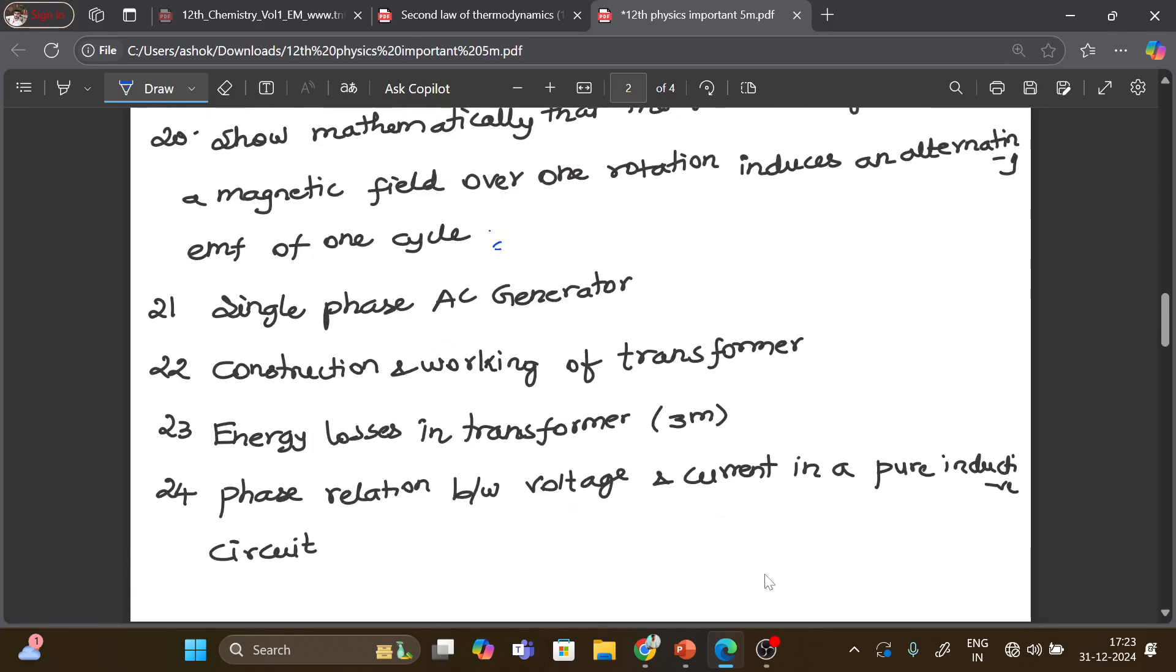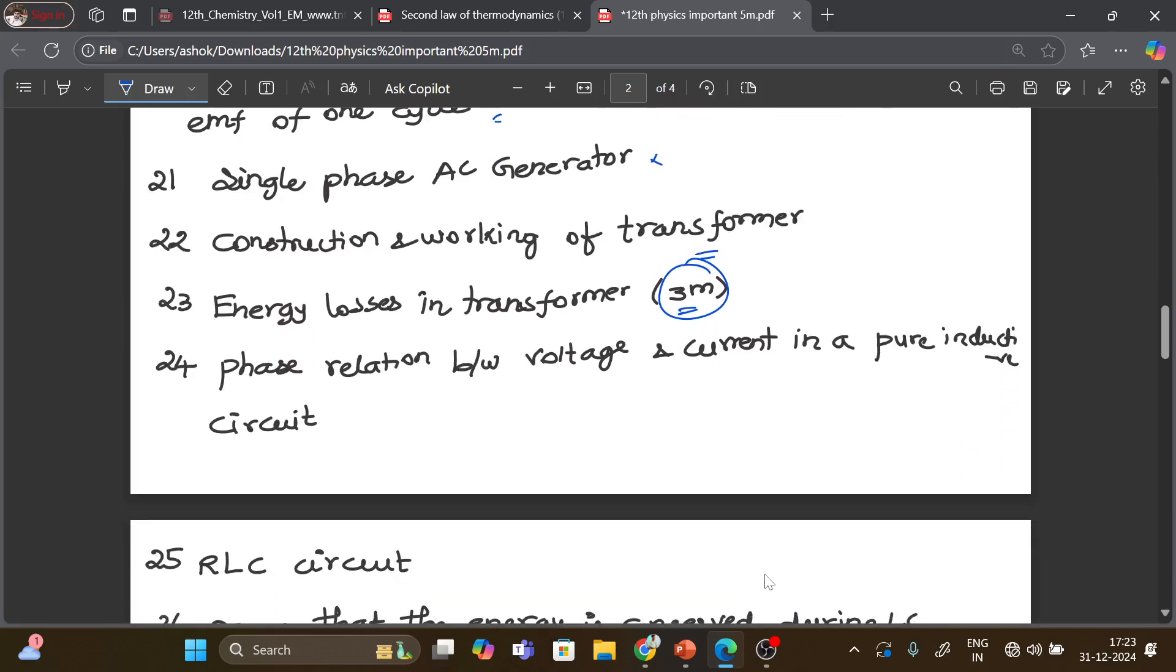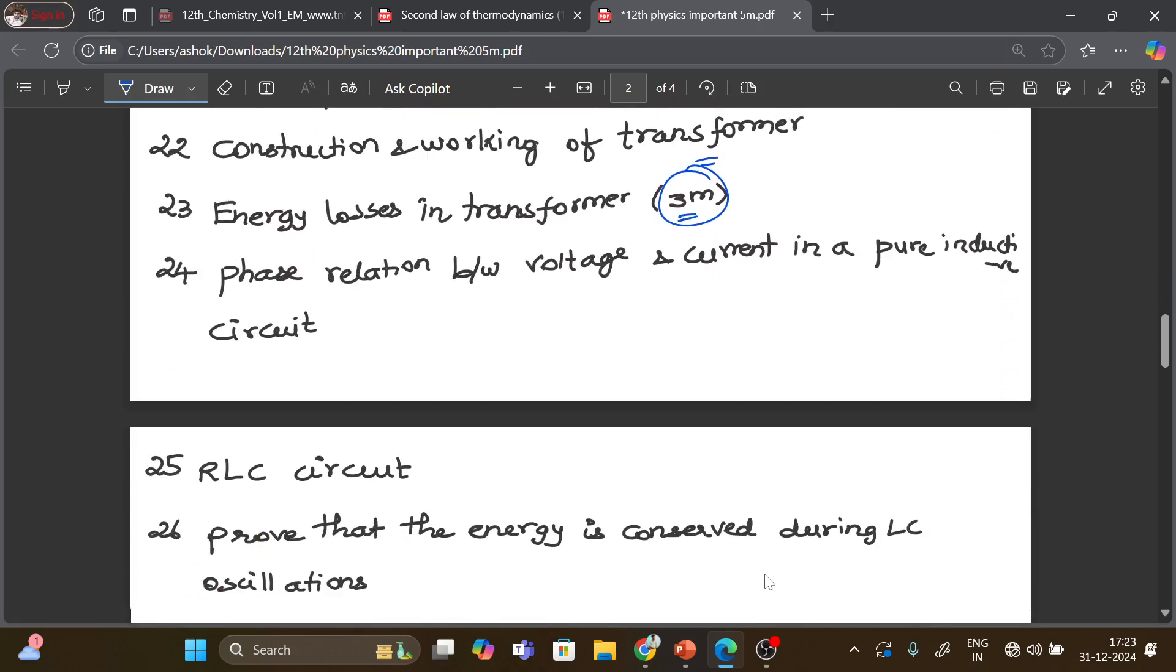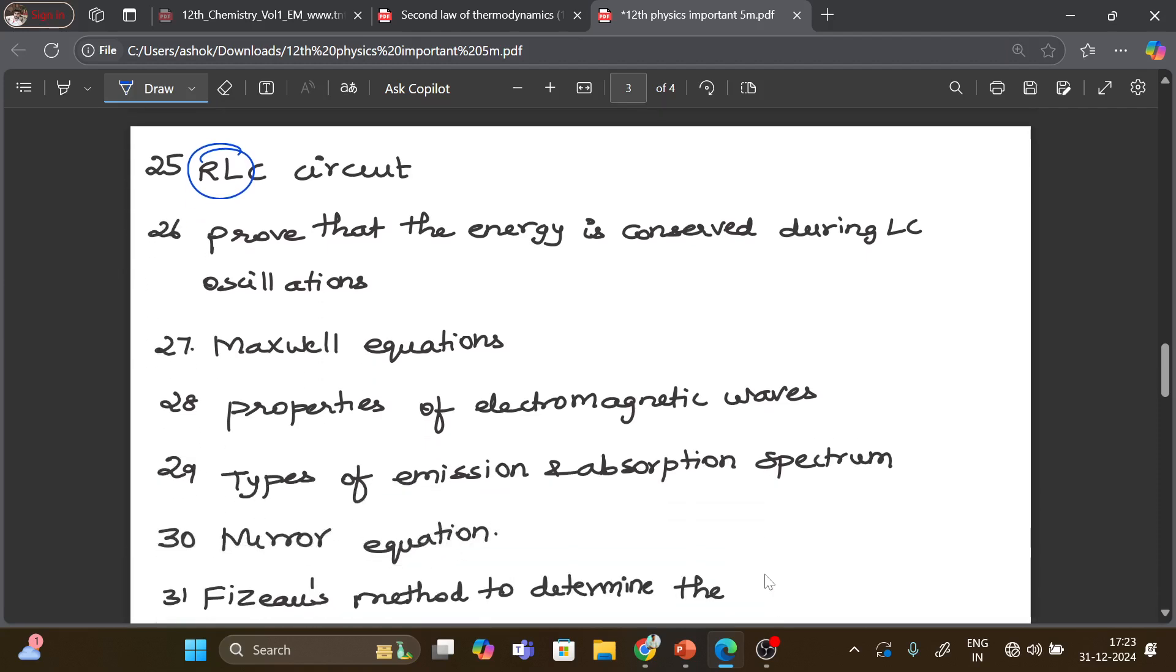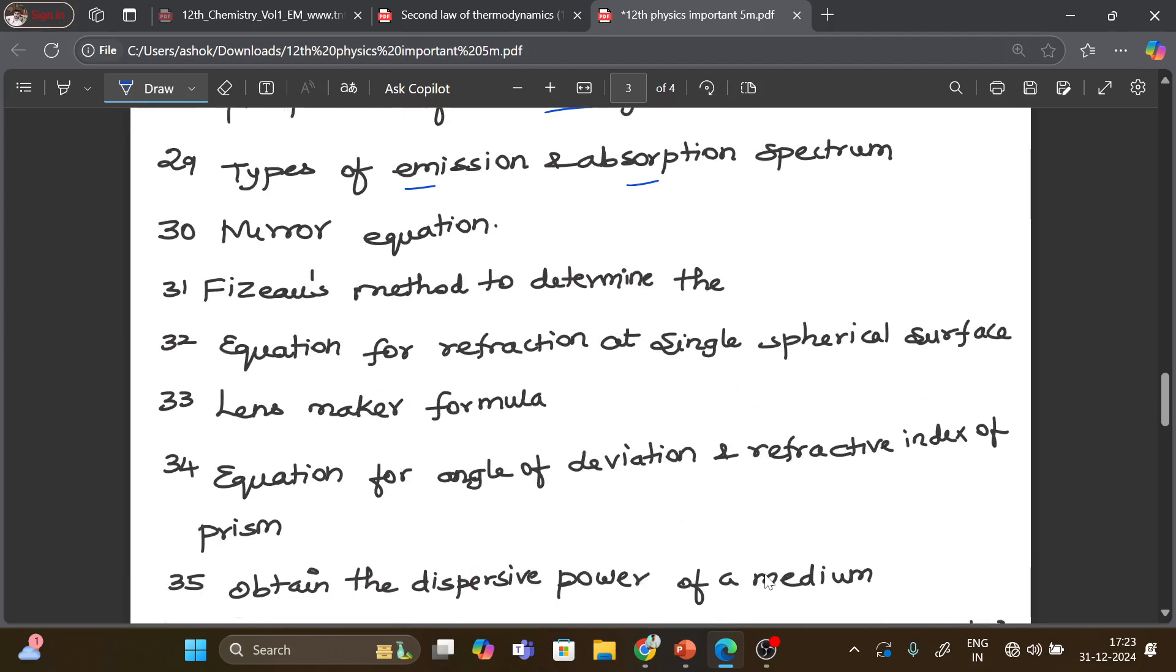Single phase AC generator, just check the question. Construction and working of transformer, 5 mark question. Energy losses in transformer, 3 mark question. Phase relation between voltage and current in pure inductive circuit. Let's check the RLC circuit. Prove that the energy is conserved during LC oscillation. Maxwell equation, properties of electromagnetic waves, emission and absorption spectrum, very important. This is the second volume.